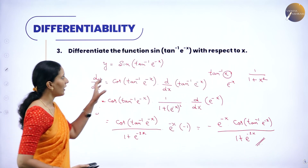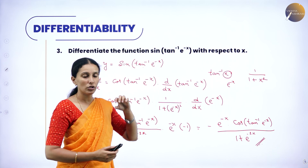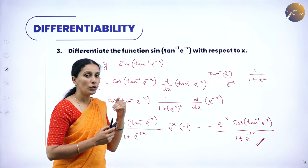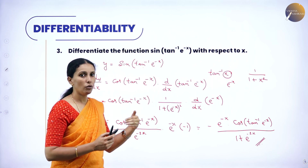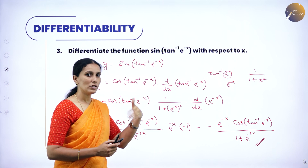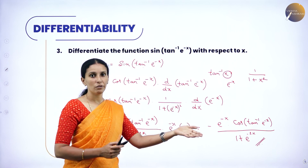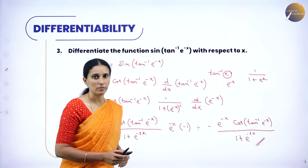So be very careful when you have a composite function — you have to use the chain rule one by one. That is, first one derivative of the outer function, then again one more derivative of the inner function.